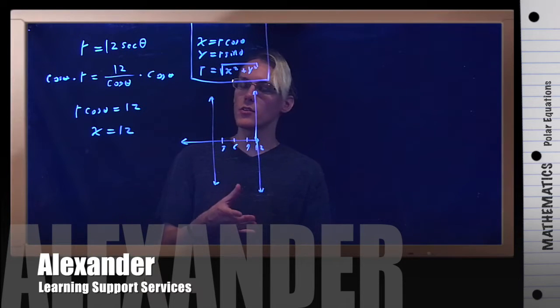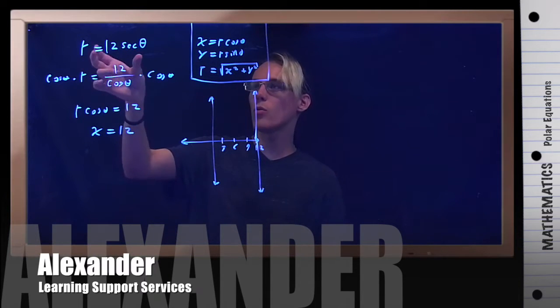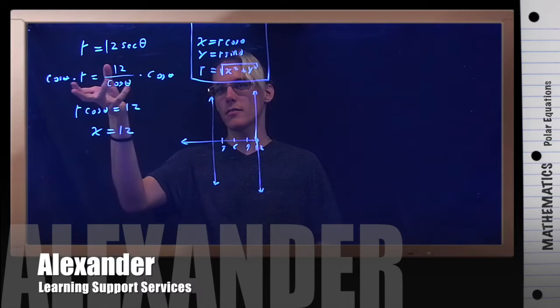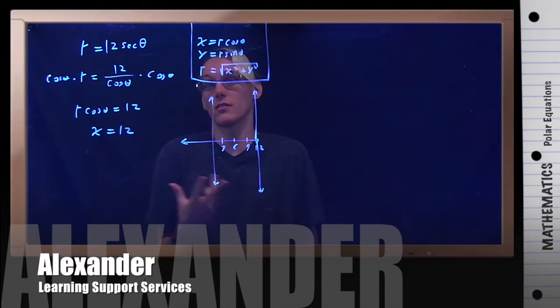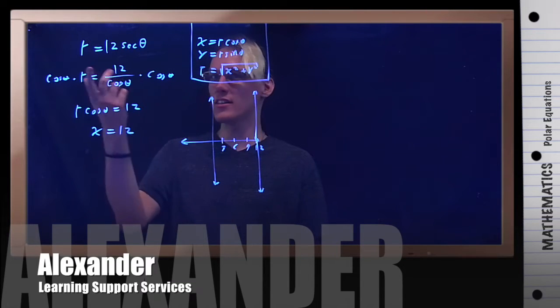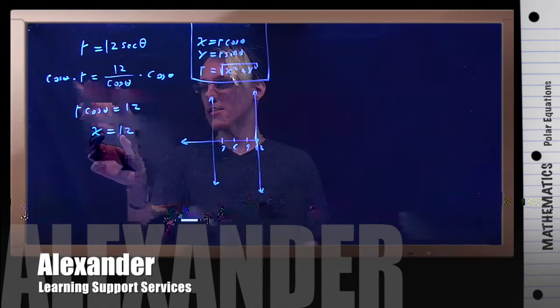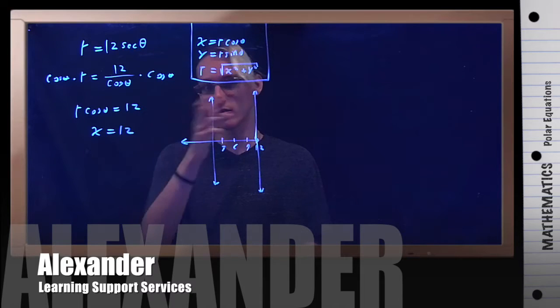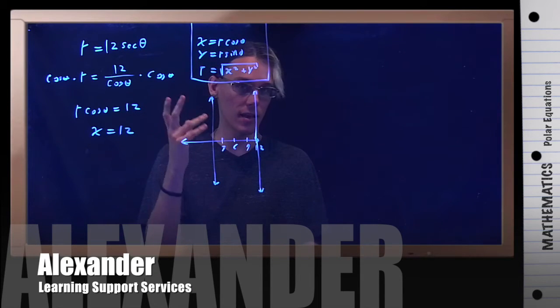And there we go. Which is interesting because when you look at this in polar form, it just doesn't, to me anyway, intuitively look like a straight line. But if you manipulate this, remember your identities, you can just get down to x equals 12 where it's very obvious that that's all it is. And that is this example.